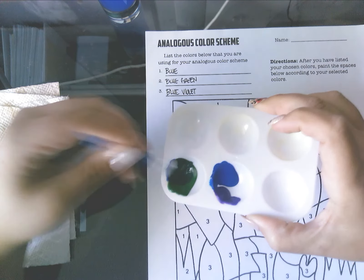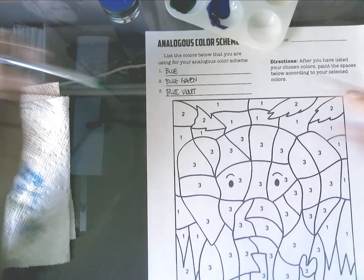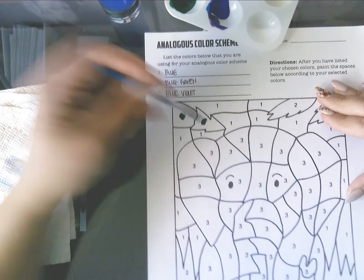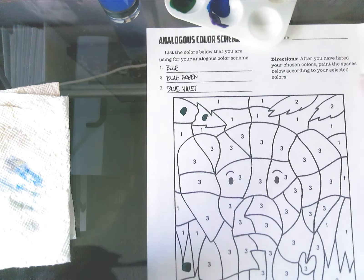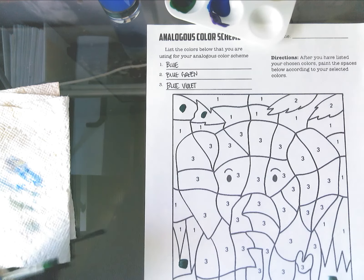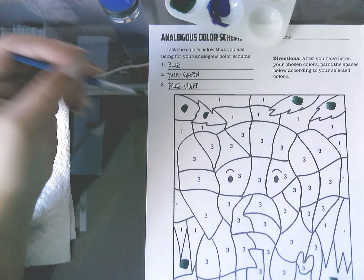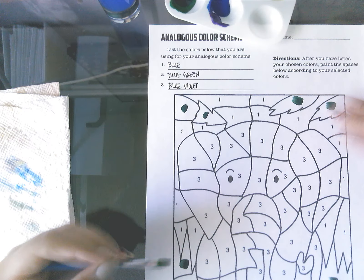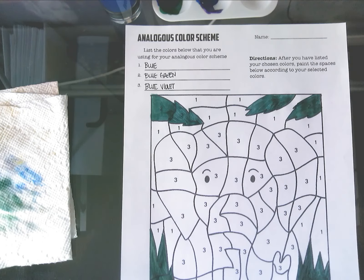And since I just mixed the blue-green, I'm going to go for that. So blue-green is number two. So anywhere I've got a two, I'm going to make a little dash on my paper. And I don't believe I see any more. So I'm going to fill in those spaces with my blue-green color.